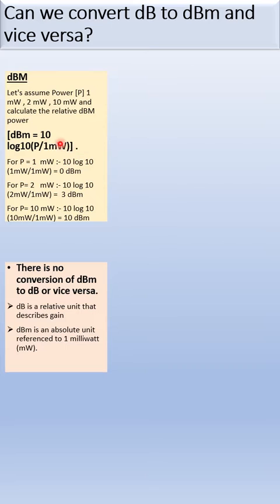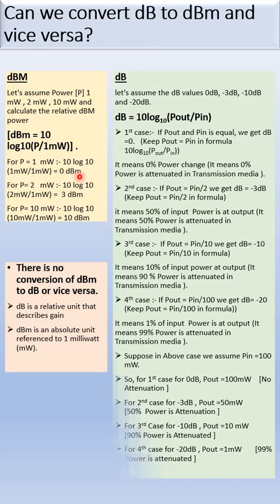So if we are taking P equal to different power like 1 milliwatt, 2 milliwatt, 10 milliwatt, we will get 0 dBm, 3 dBm, and 10 dBm power. That is the absolute power.